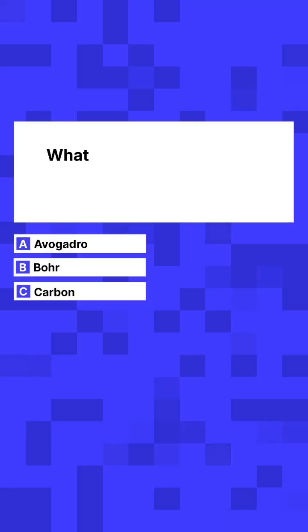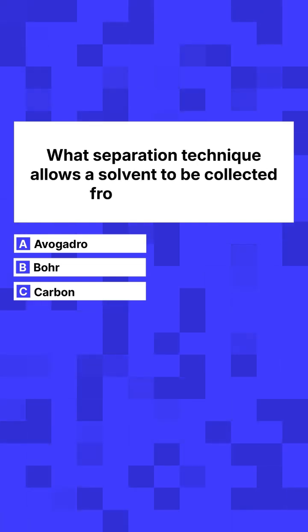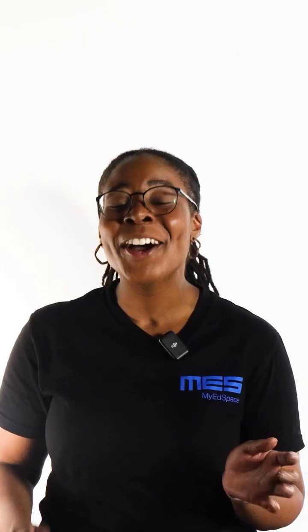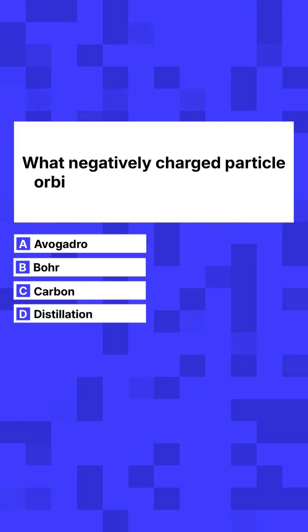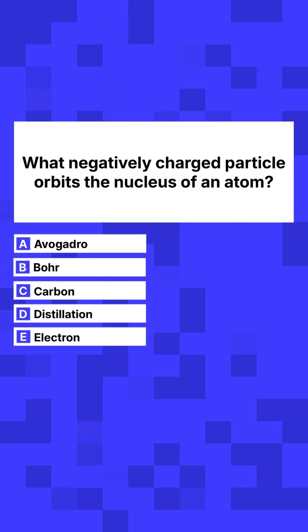D. What separation technique allows a solvent to be collected from a solution? Distillation. E. What negatively charged particle orbits the nucleus of an atom? Electron.